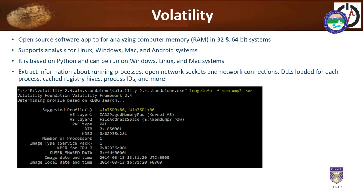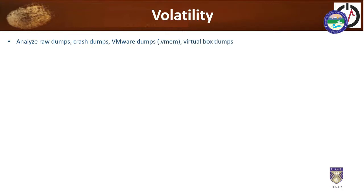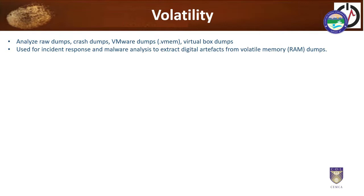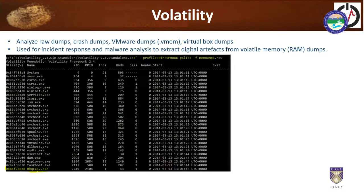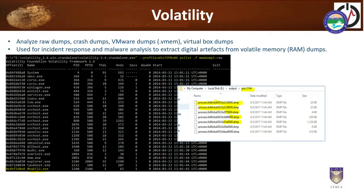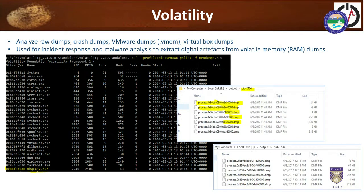When you run Volatility, you get image information using: volatility imageinfo -f memdump.raw. When you say dot raw, it creates a memory dump of that file — whatever information is in your RAM gets saved as a .raw file. Volatility helps you analyze raw dumps, crash dumps, or even VMware dumps (.vmem) or VirtualBox dumps. It can be used for incident response and malware analysis to extract digital artifacts from volatile memory dumps. You run a standalone command line .exe file with a profile and raw dump, and then you can have DMP files created and analyzed very easily.